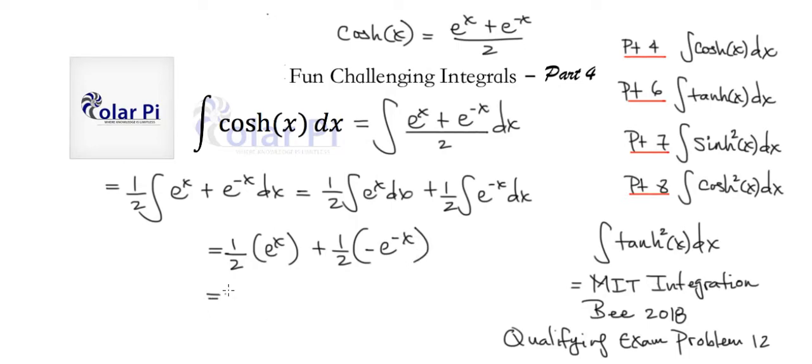And so then we'll have, factoring out the one half since both terms have a one half in them, we'll get one half times and then it's e to the x and then minus e to the negative x and then plus c. I should have written a plus c here. But you should recognize that what we have is sinh x plus c.